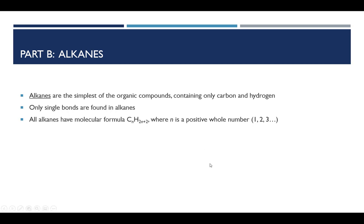where n can be any positive whole number. For example, if n is 1, then 2 times 1 plus 2 is 4, so the formula is CH4. If there are 5 carbons, then n is 5, so C5H2 times 5 is 10 plus 2, which is 12. So C5H12, and the name of that is pentane.